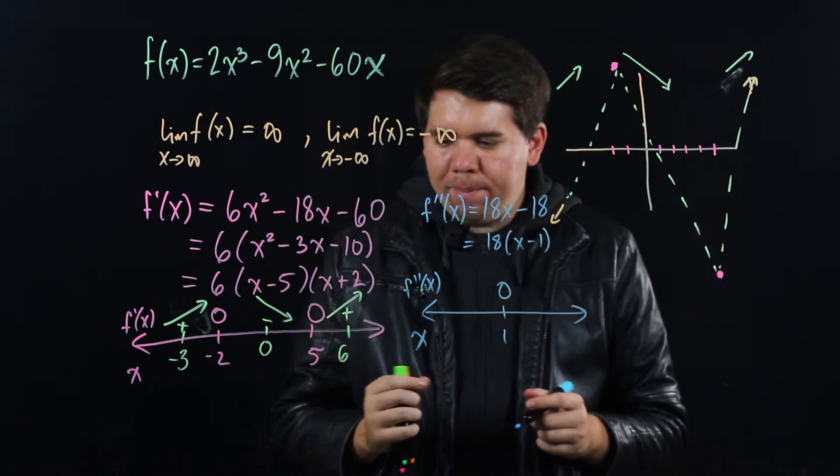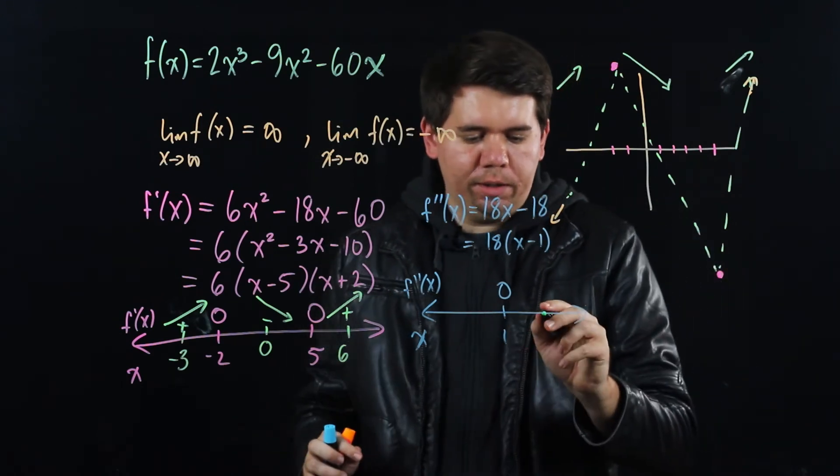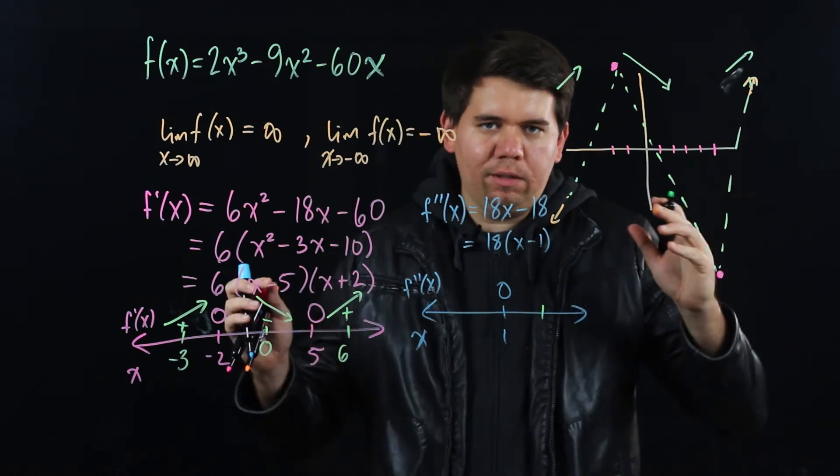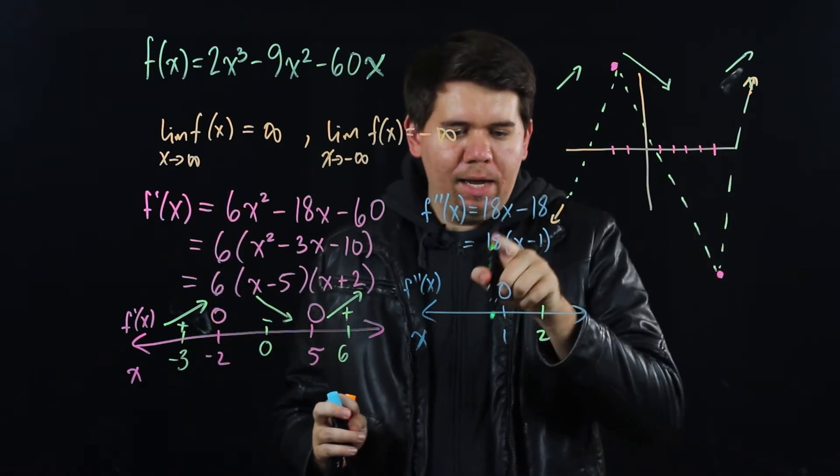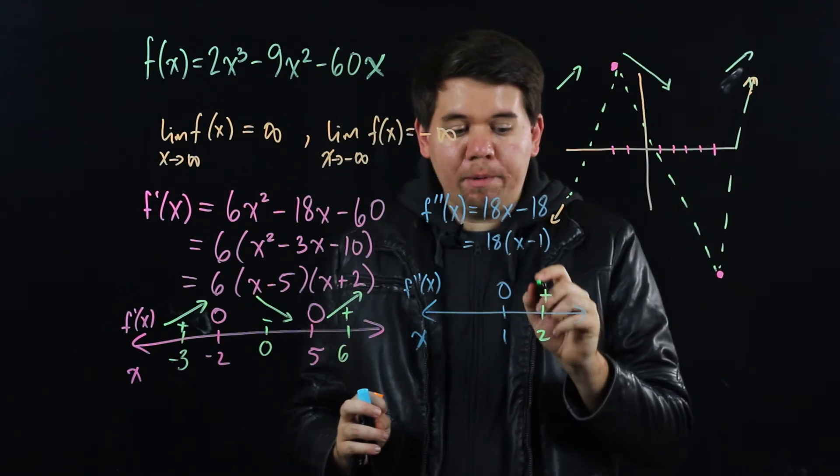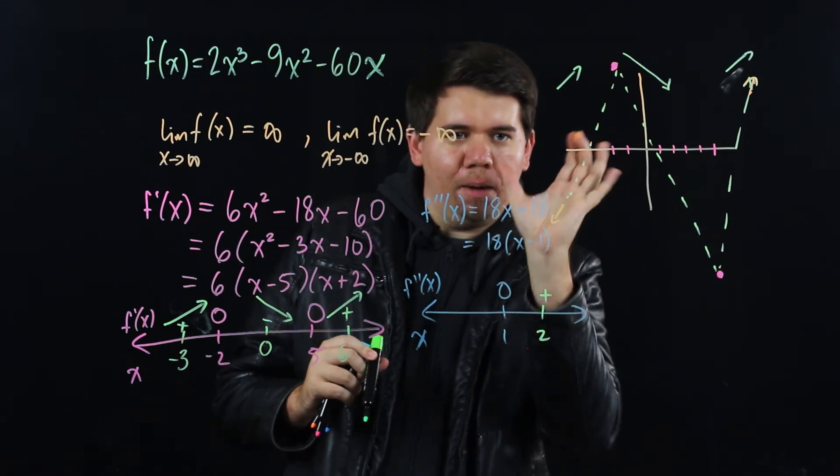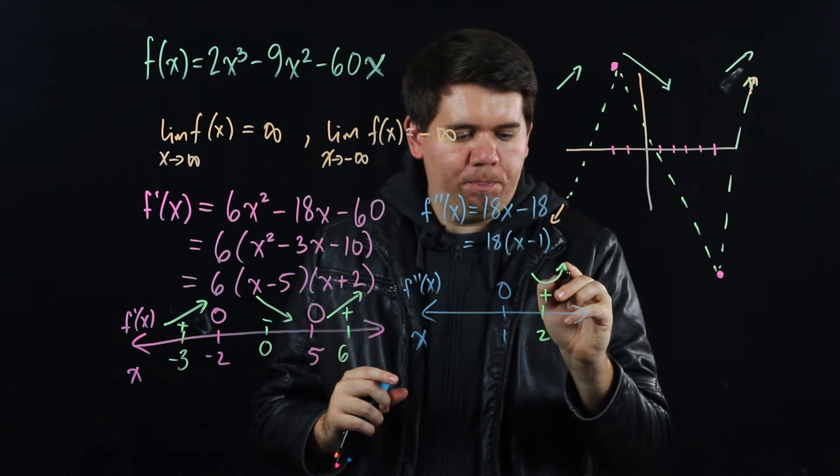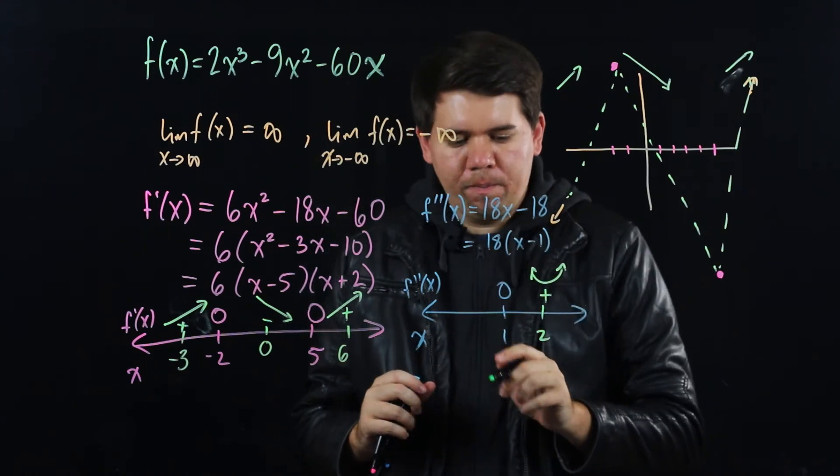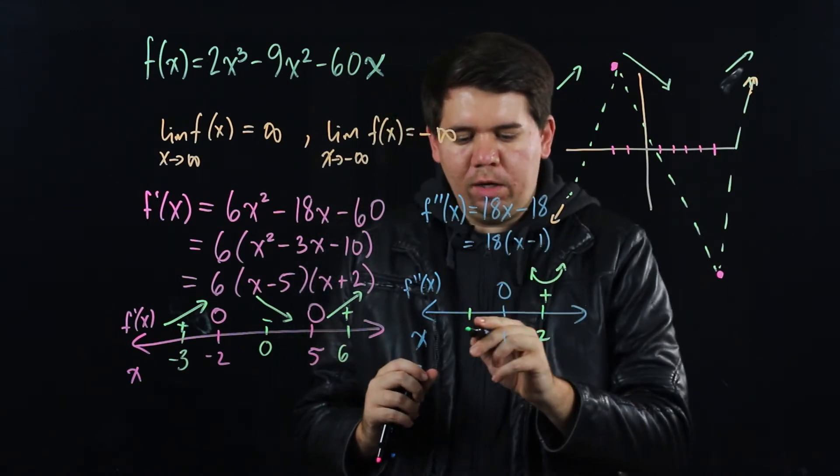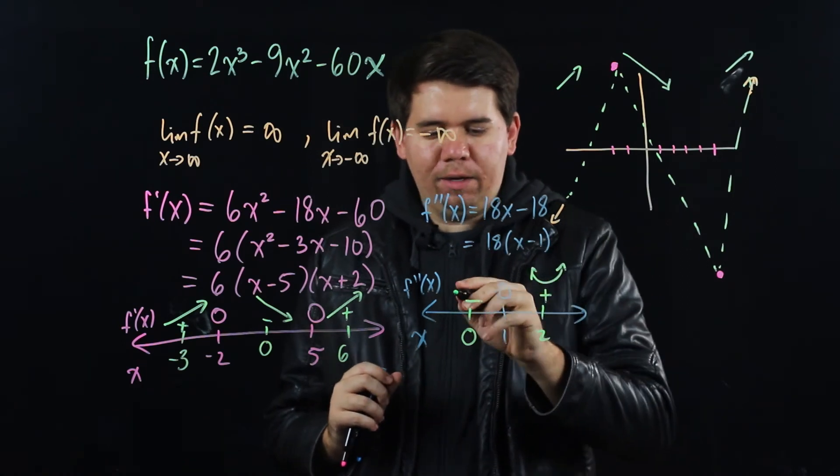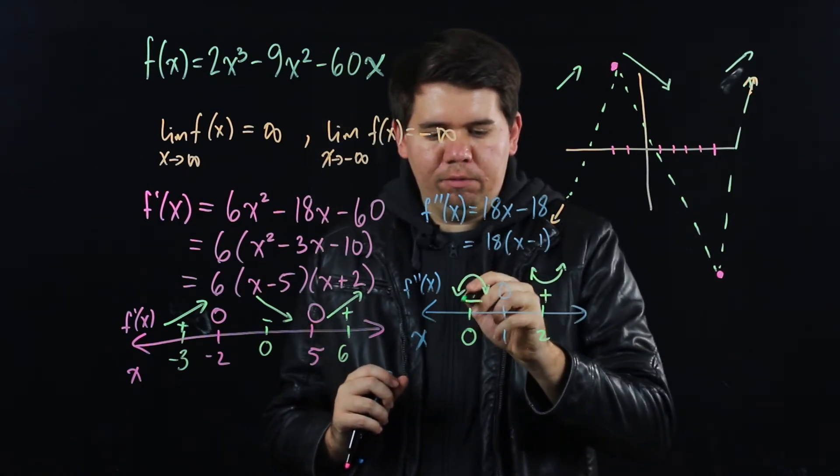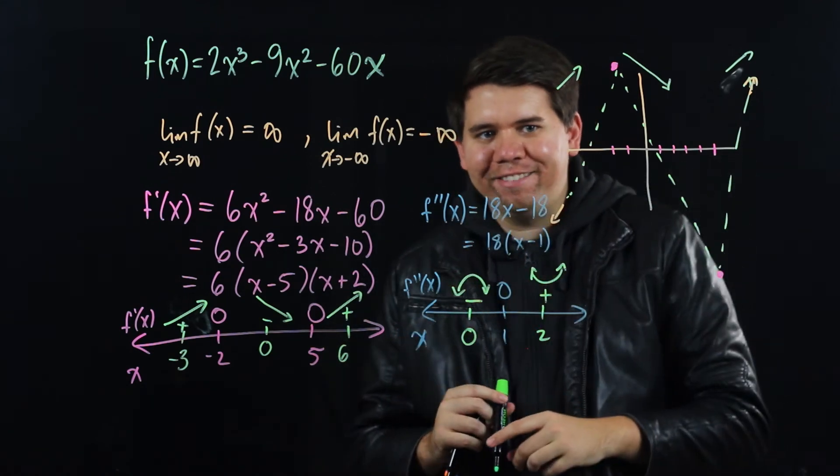And then we can think about what happens if I plug in some value bigger than 1. Plug in 2 or 6 or 15 or whatever, just do 2 because it's bigger than 1, and I get a positive number. So remember, positive for second derivative is concave up. Concave up, it's smiling because it's positive. Plug in a number smaller than 1, like 0, you end up getting a negative value. So it's concave down. Frowny face, concave down.